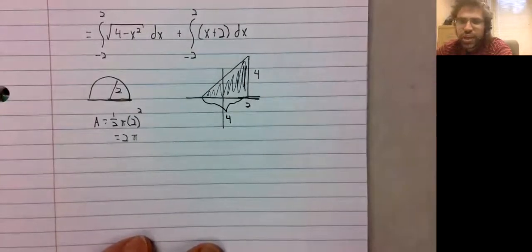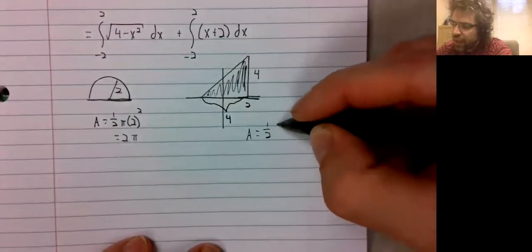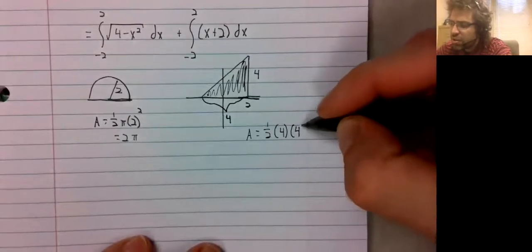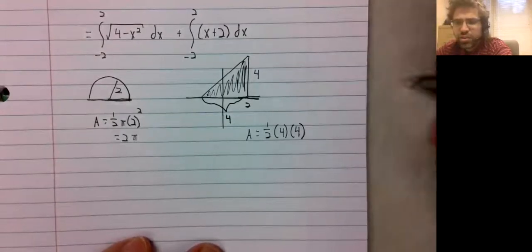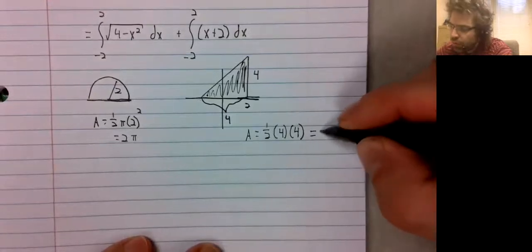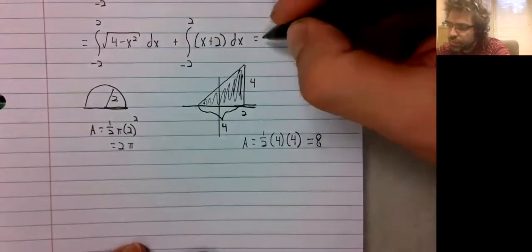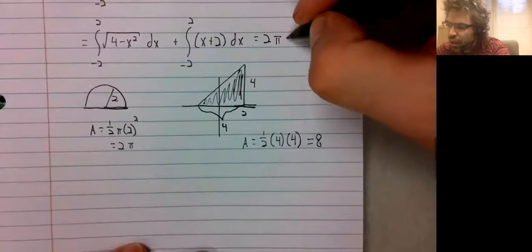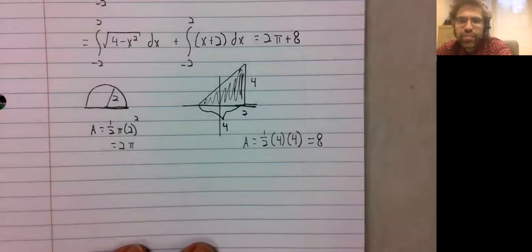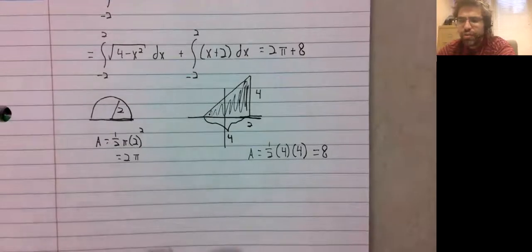And the area of this triangle is one half the base times the height. So 2 times 4, which is 8. Two pi plus 8 is the integral we were originally asked for.